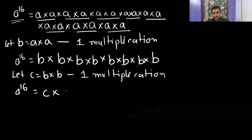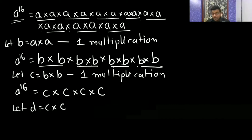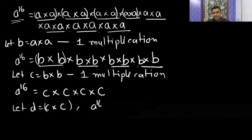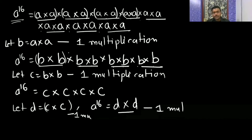So a to the power 16 becomes c times c times c times c. Now let d equal c times c — one more multiplication. Substituting, a to the power 16 equals d times d, which is one final multiplication. So to compute a to the power 16 you need a total of only 4 multiplications — compared to 15 if done naively.